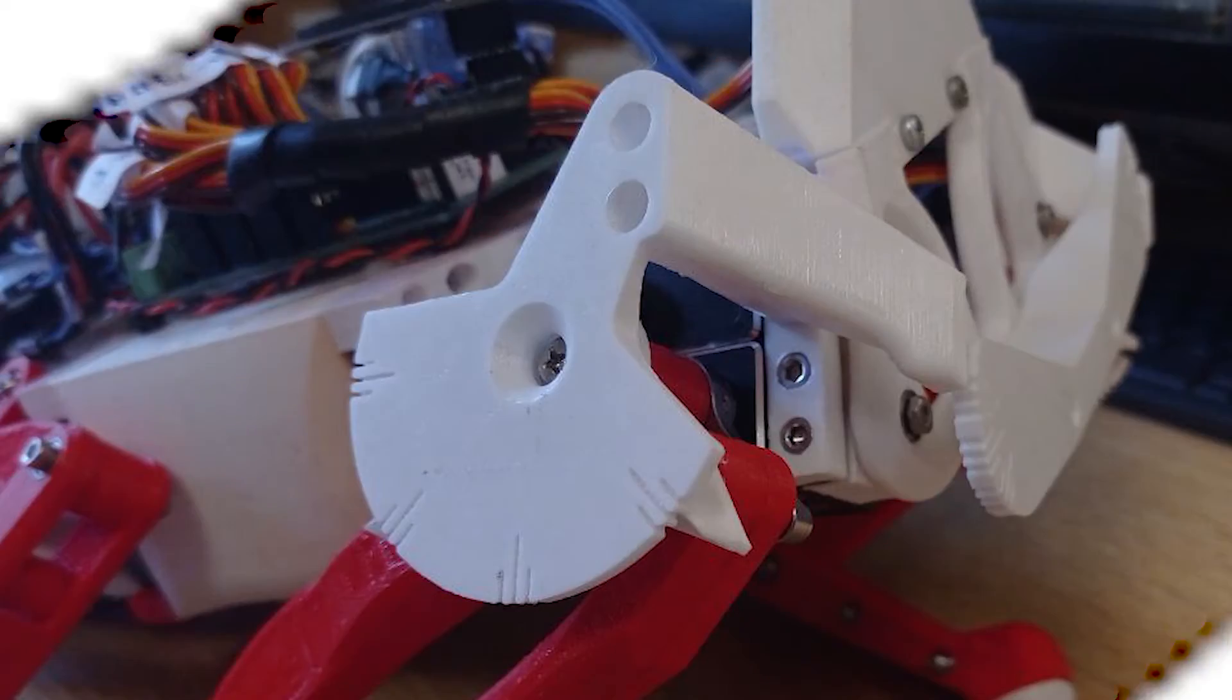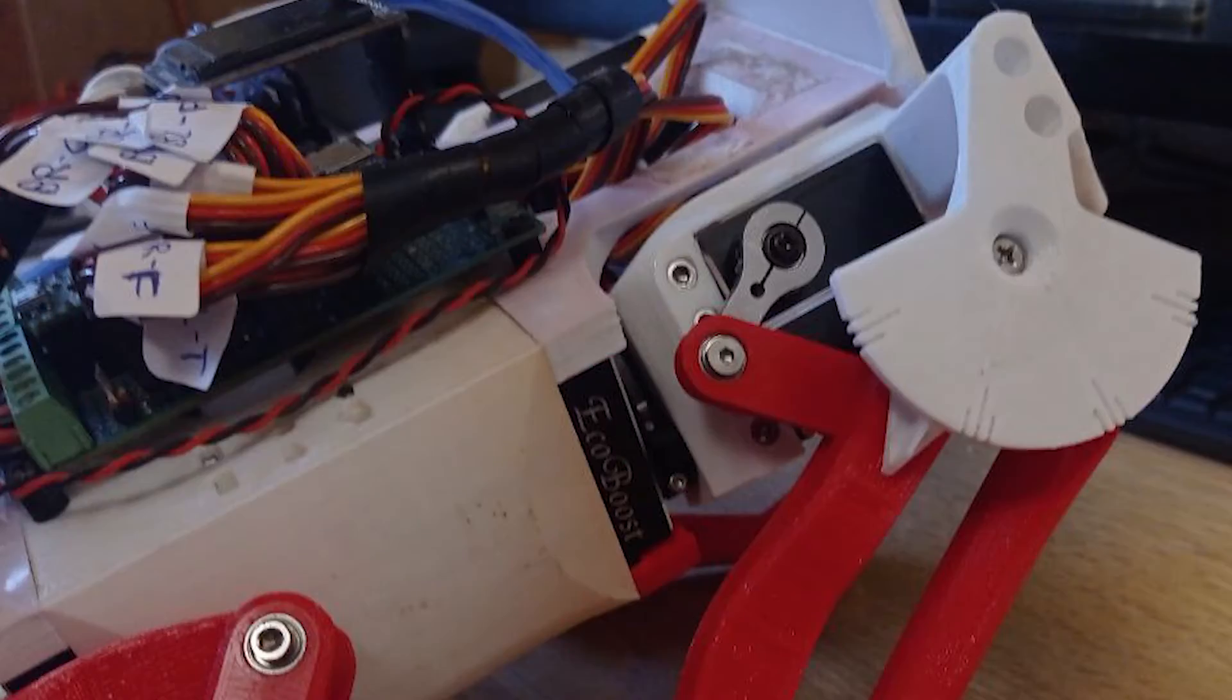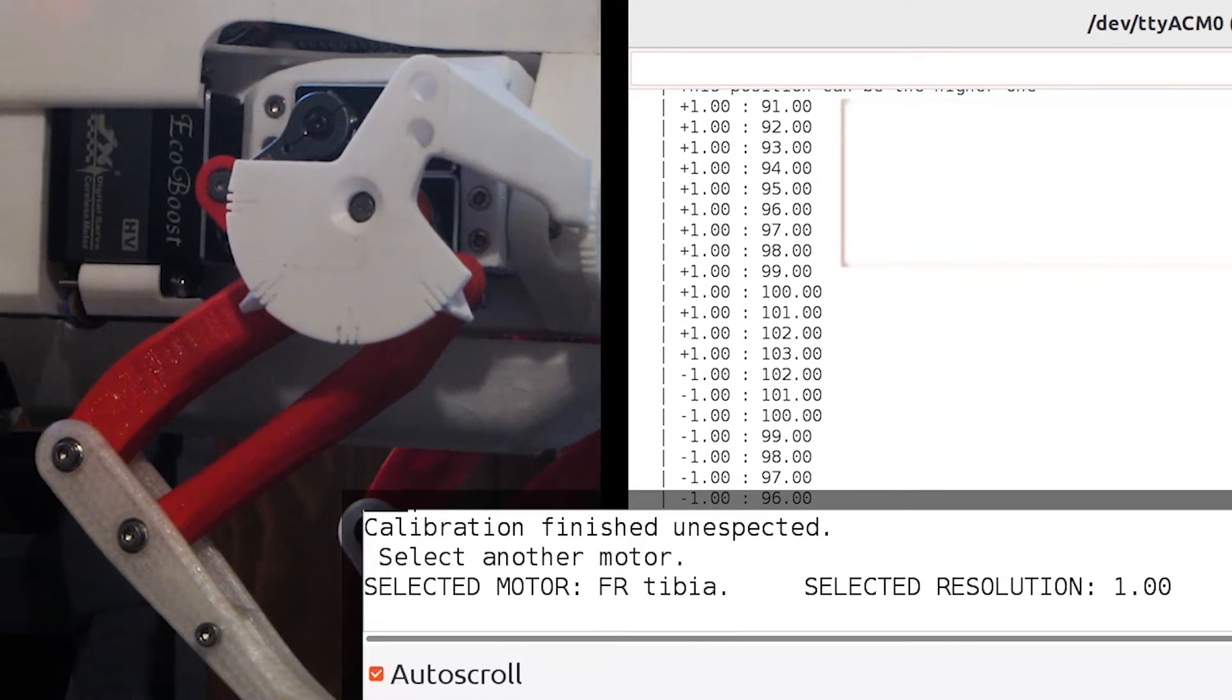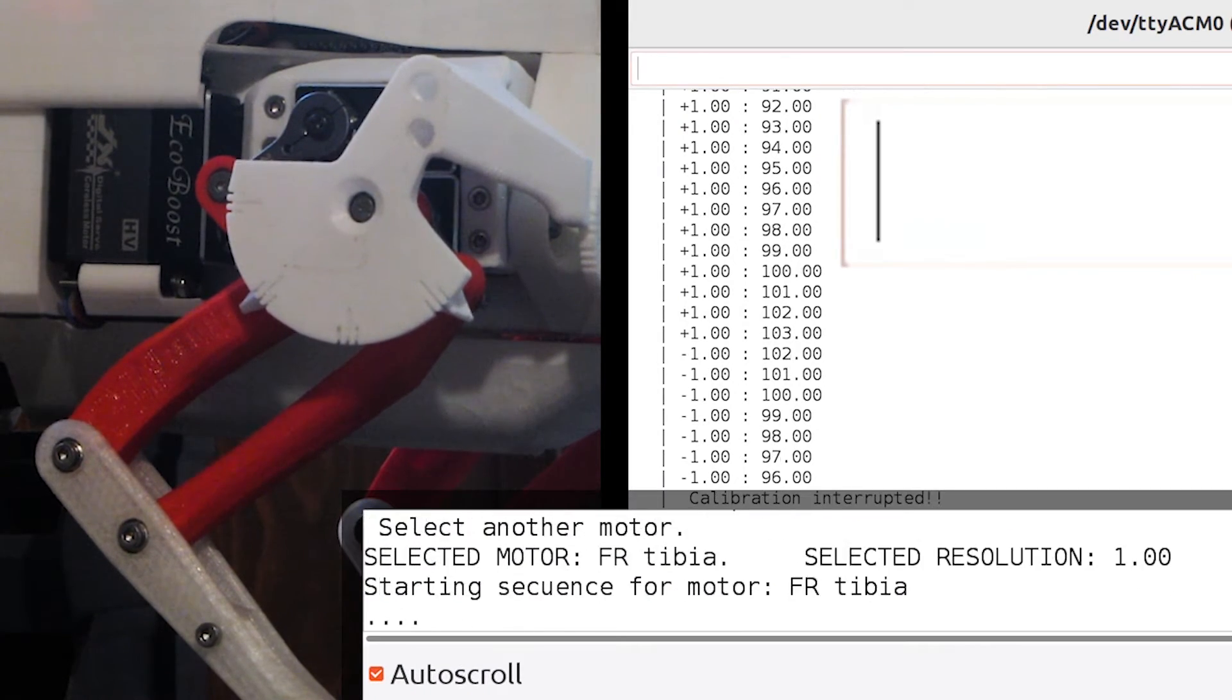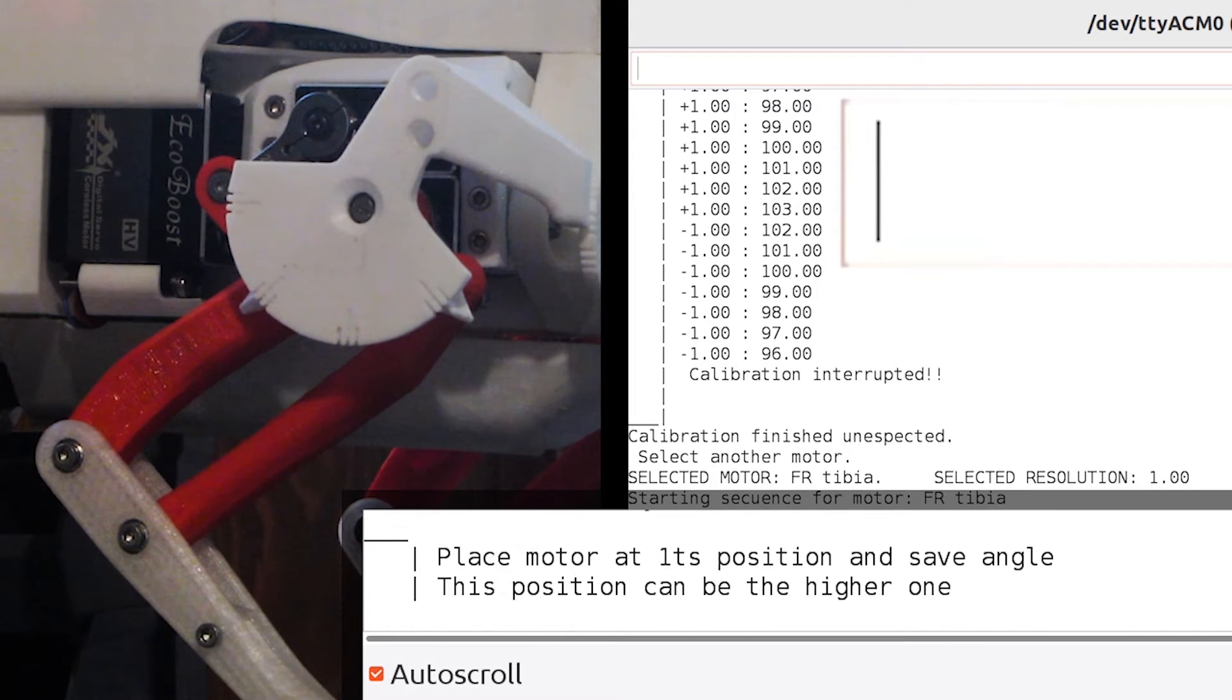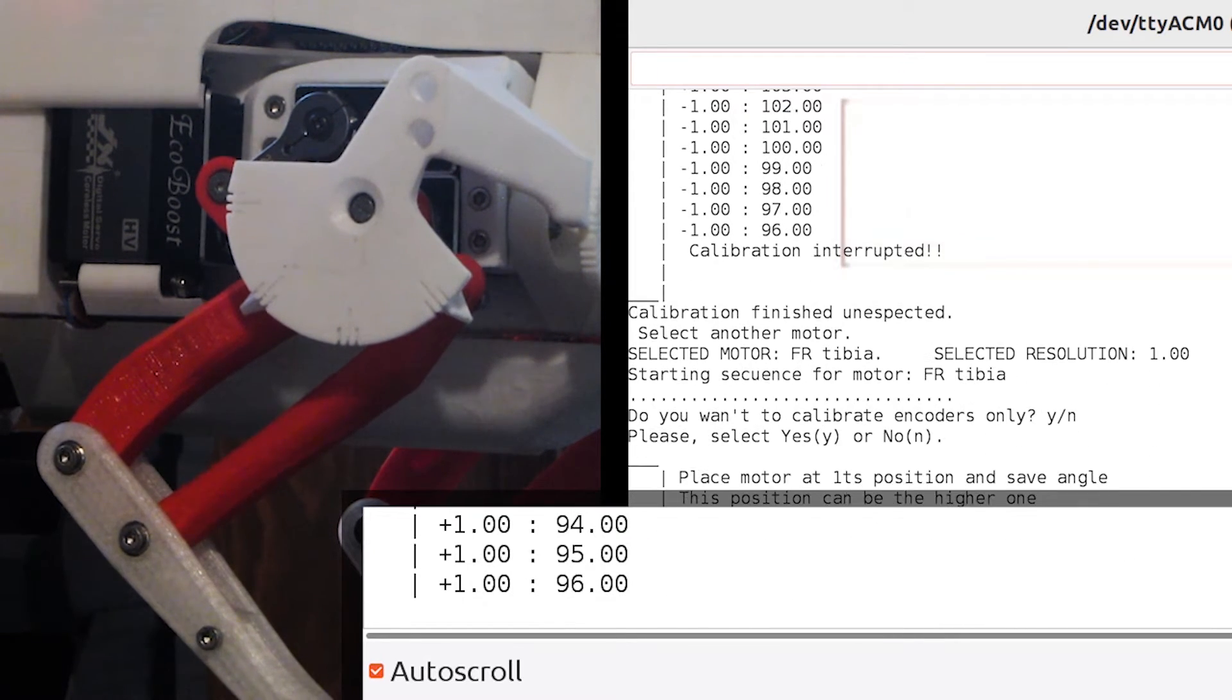To place servos at their real angles, it's always useful to make a calibration tool. Then a simple program can be written to interpolate servos to match the output angles of the inverse kinematic model. Two known angles are saved.